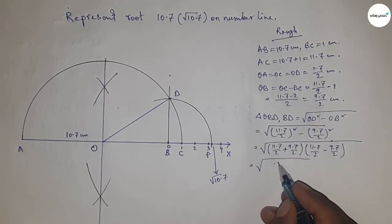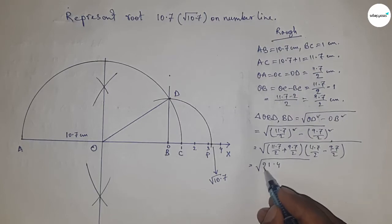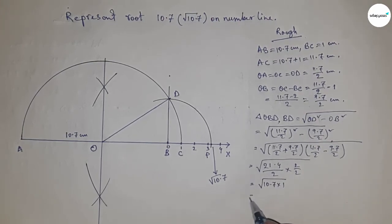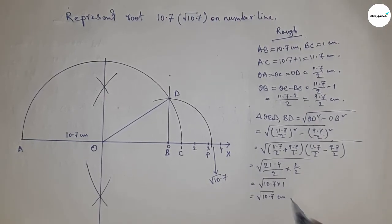From these, this is 4 and 21.4 by 2 into 2 by 2. So this is 10.7 into 1, so this is root 10.7 centimeter.